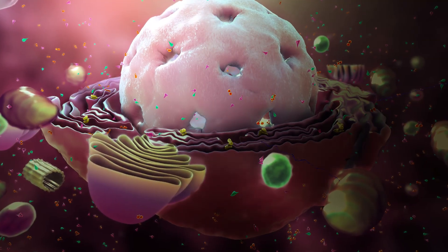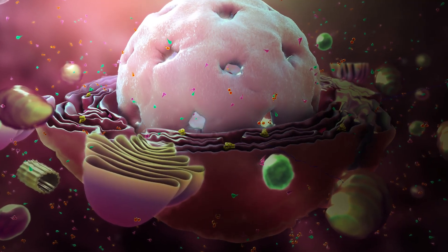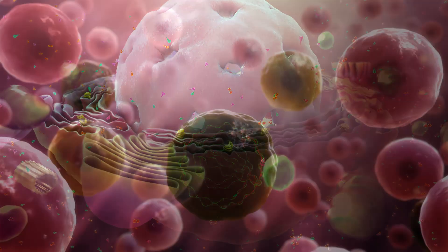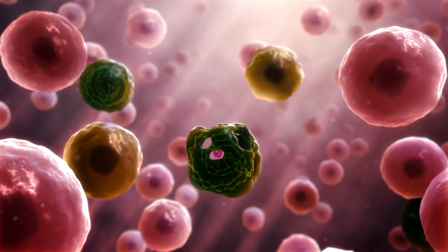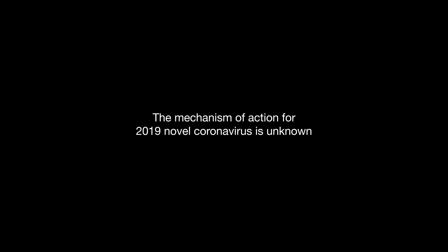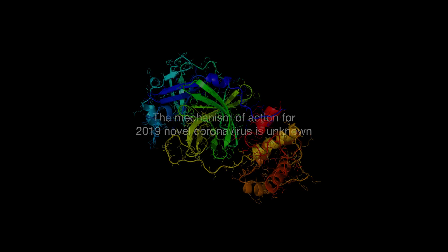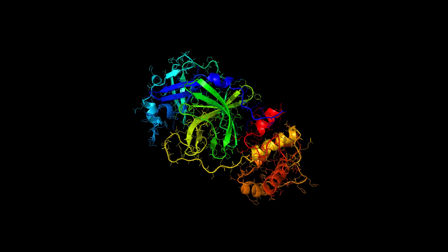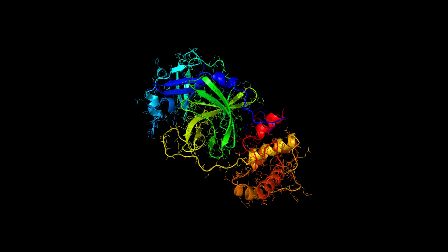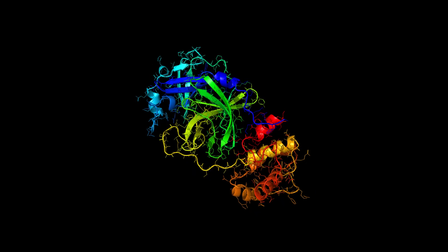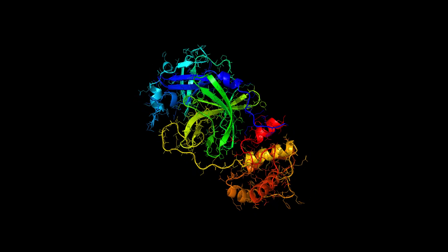Meanwhile, the stress of viral production on the endoplasmic reticulum eventually leads to apoptosis, or cell death. It should be noted that the mechanism of action for the 2019 novel coronavirus is unknown. However, scientists in China have sequenced the genome, while others have used the sequencing to visualize the structure.